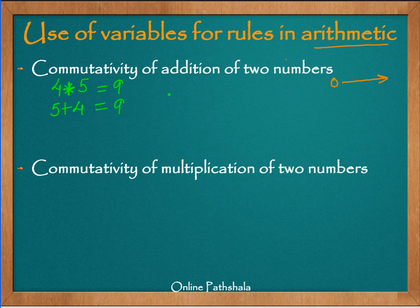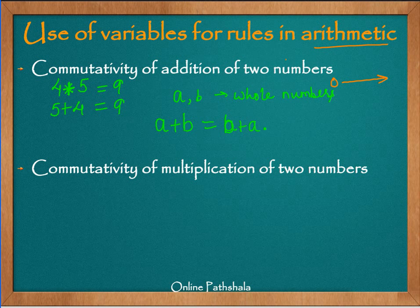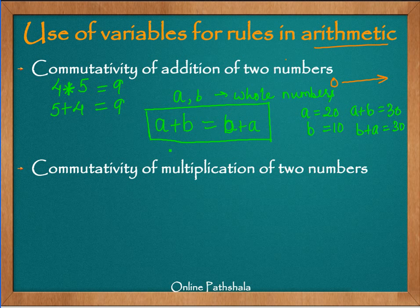We can take two variables to represent addition of two numbers. Let a and b be any two whole numbers — they can take on any value. If I want to represent the commutative property, I would say that a and b are commutative if a + b gives the same value as b + a. For example, when a is 20 and b is 10, a + b is 30 and b + a is also 30. Therefore, we can say that a + b and b + a are commutative. This is how we represent the commutative property for addition of whole numbers.